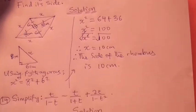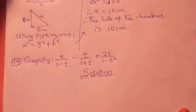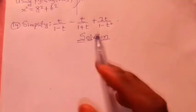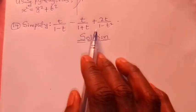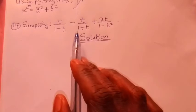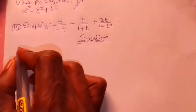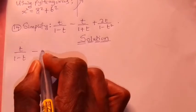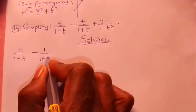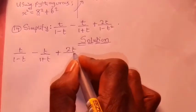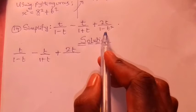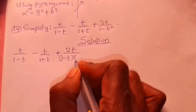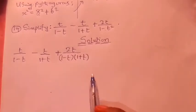The second question involves factorizing an algebraic expression. We already have videos on this, so check those out as well. We write the expression as: T/(1 − T) − T/(1 + T) + 2T/(1 − T²). Looking at the denominator 1 − T², we apply the difference of two squares, which gives us (1 − T)(1 + T).